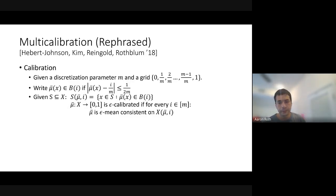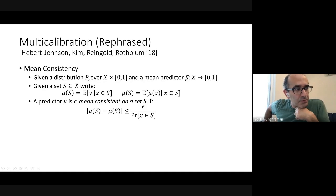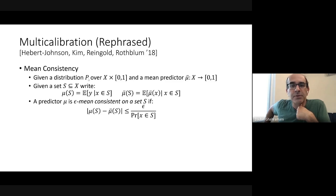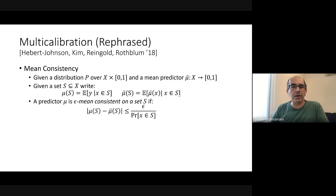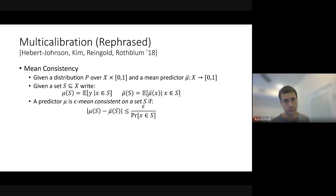We'll never achieve exact mean consistency from finite samples, so I'll define an epsilon-approximate version. A predictor is epsilon mean consistent on a set S if the difference between the true mean and the predicted mean differs by at most epsilon divided by the probability that a random point falls within S. This parameterization by the measure of the set S is the right way to handle approximation given what we can achieve from finite samples.